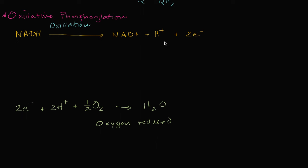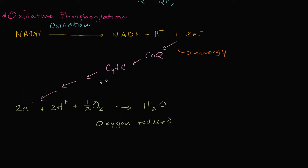They're going to be transferred to different acceptors — this is just a high-level overview — which then transfer it to another acceptor. It might go to a coenzyme Q and a cytochrome C, and it keeps going to different things, eventually getting to a state where those electrons can be accepted by the oxygen to actually form the water. And the process, every step of the way, energy is being released, and this energy is being used to pump hydrogen protons across a membrane. And we're going to use that gradient to actually drive the production of ATP.